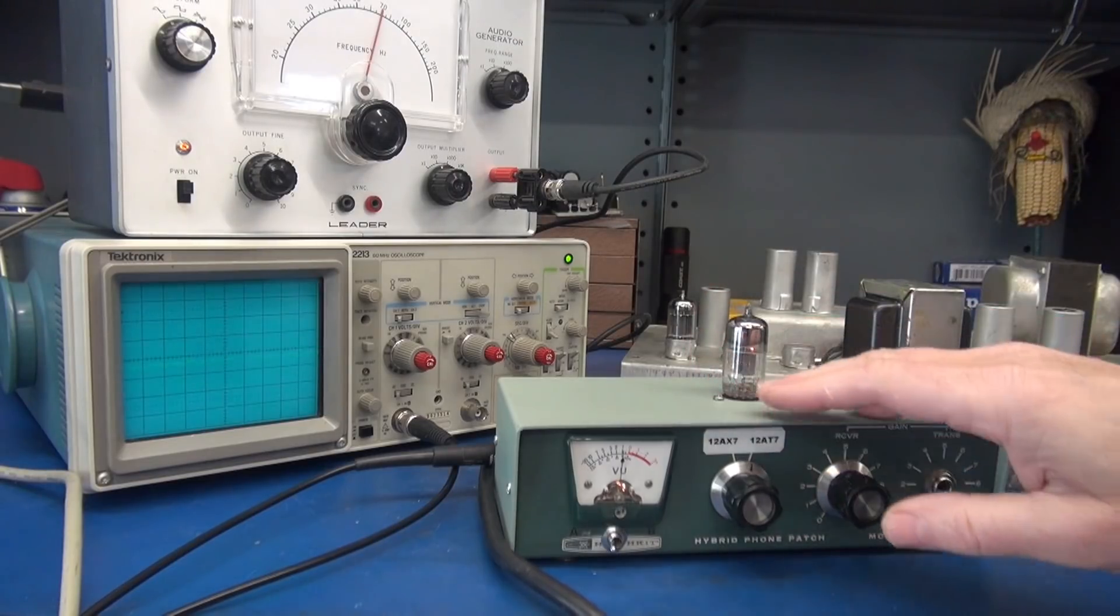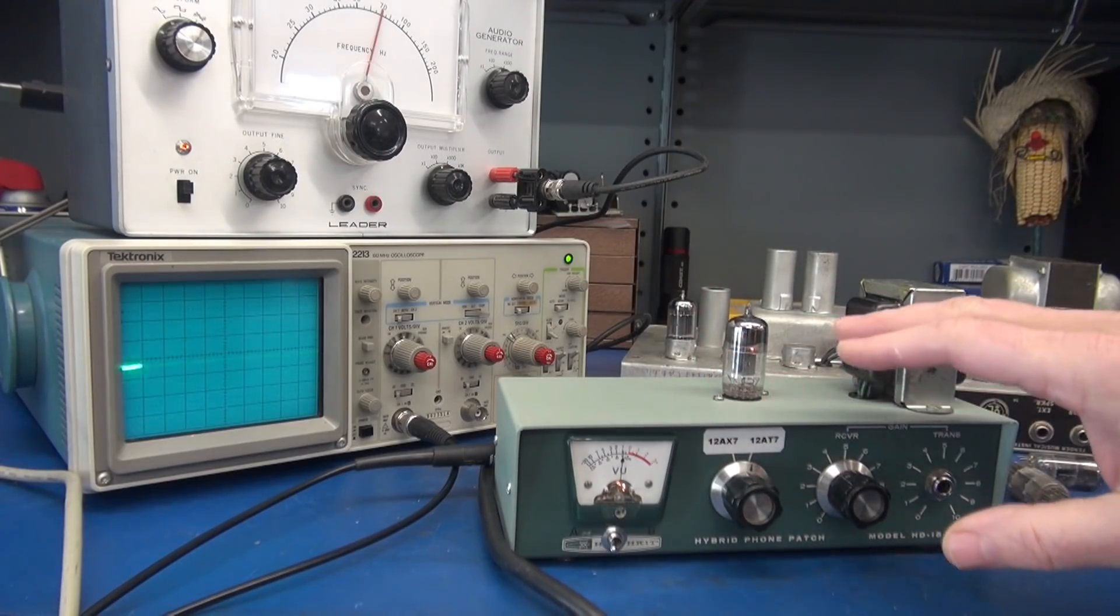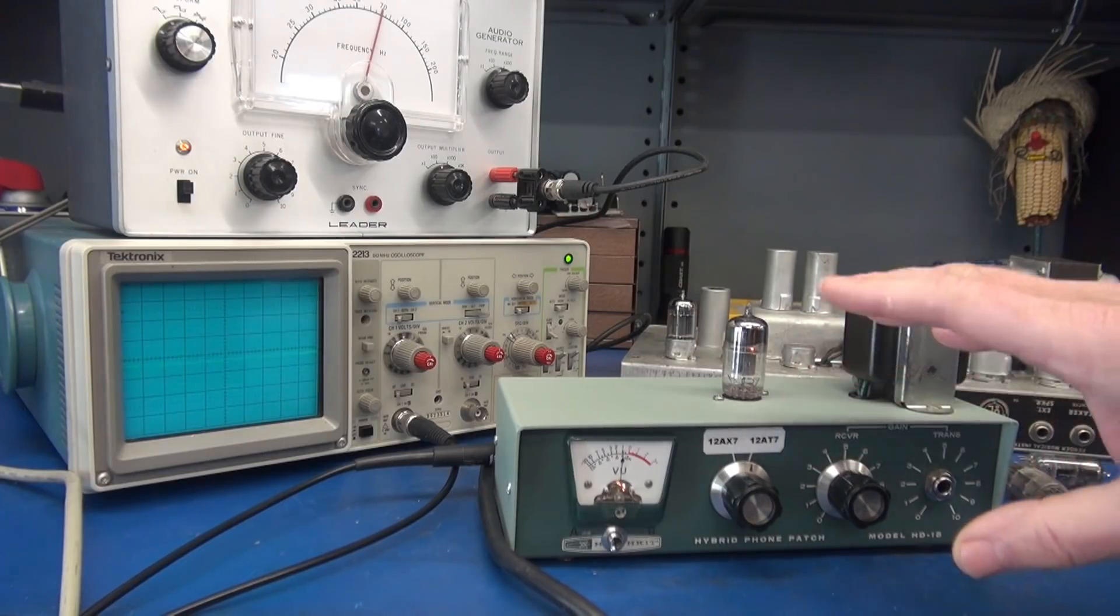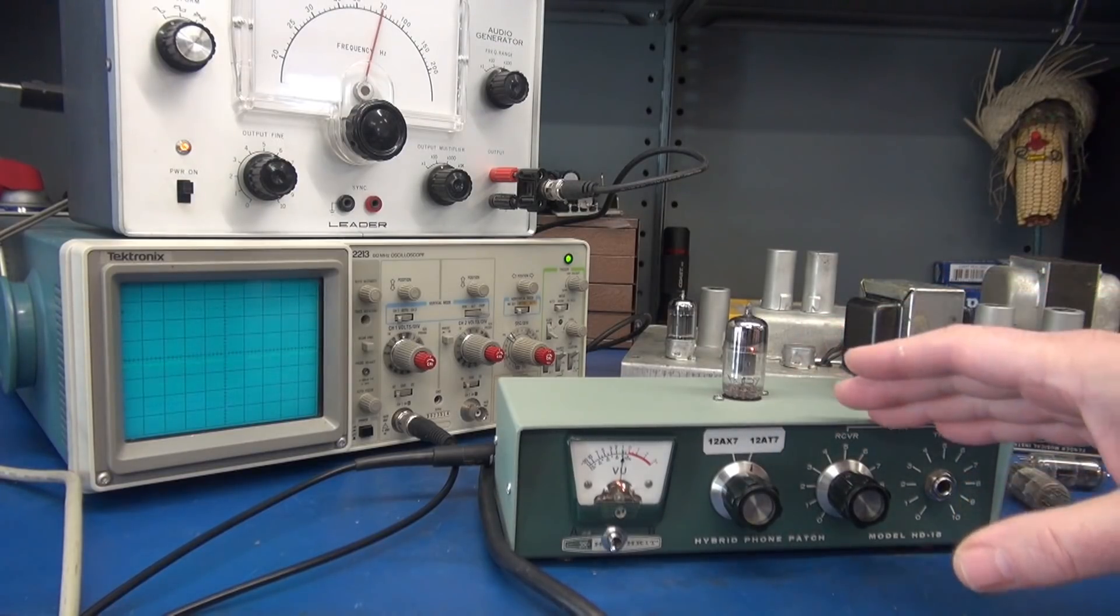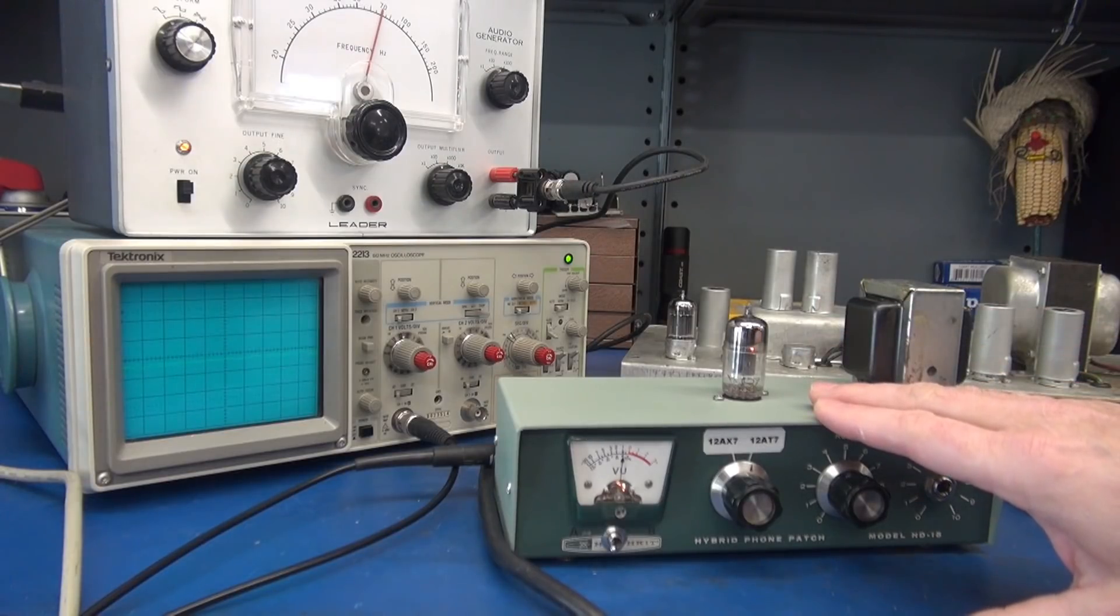Alright. So that shows you how this little unit can detect microphonics. And you can test these things individually without having to put them in your amps and say, well, I think you hear a noise. Maybe I don't. This is a foolproof method for you to put in a good tube to begin with.